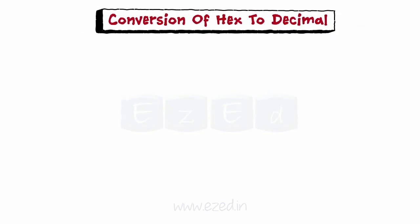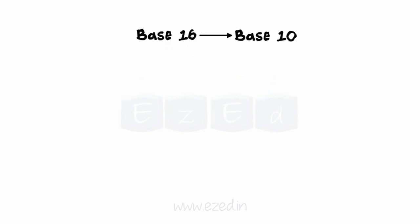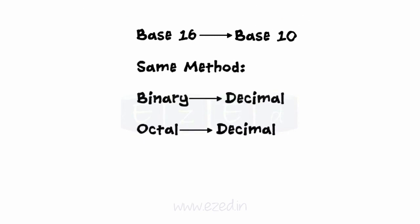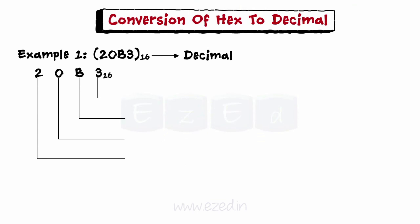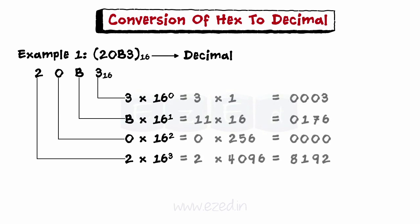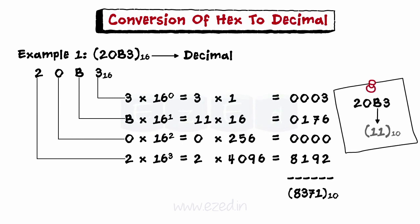For conversion of hex to decimal, from base 16 to base 10, we use the same method used to convert binary and octal numbers. From right to left, we multiply each digit of the hexadecimal number by 16 raised to successive powers, starting with the zero power, then sum the results. If one of the digits is a letter A through F, the corresponding value of 10 through 15 must be used in the multiplication. Finally, we get the decimal answer.